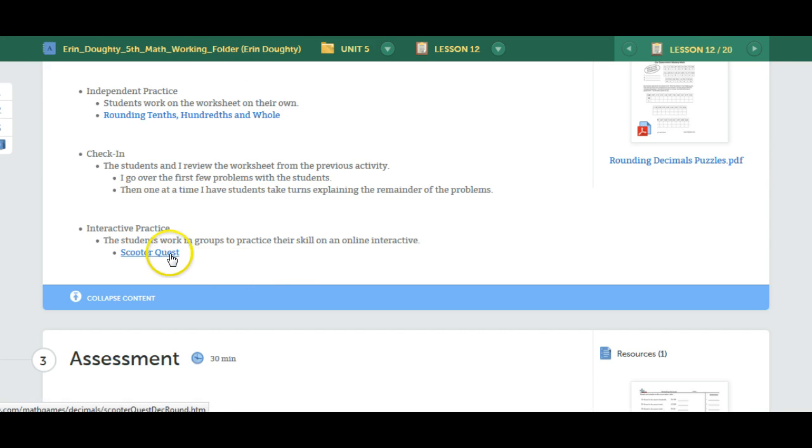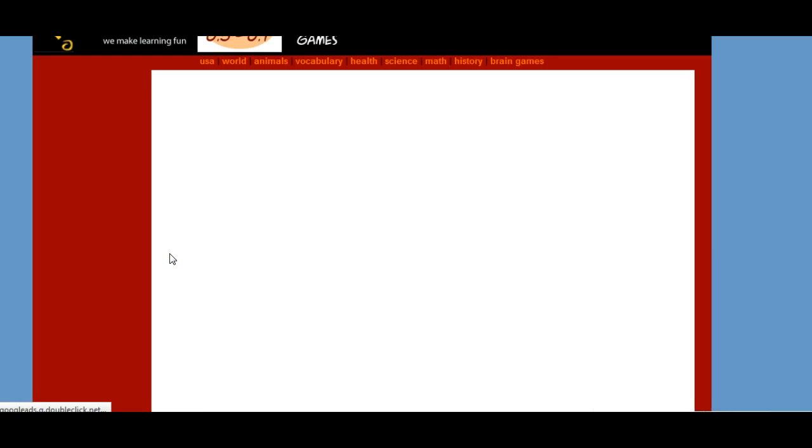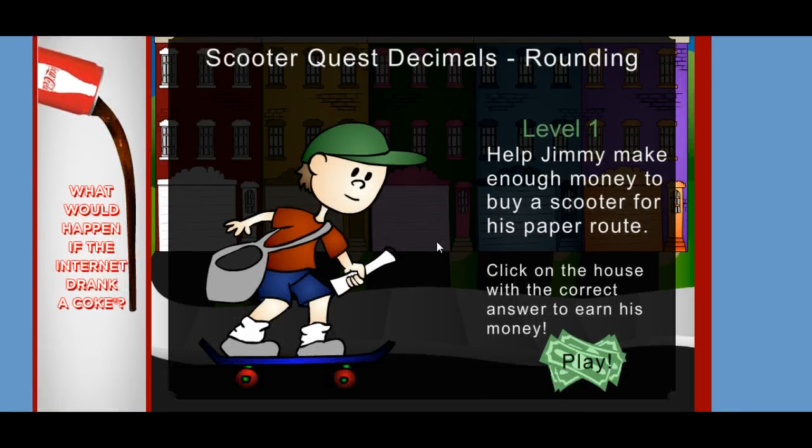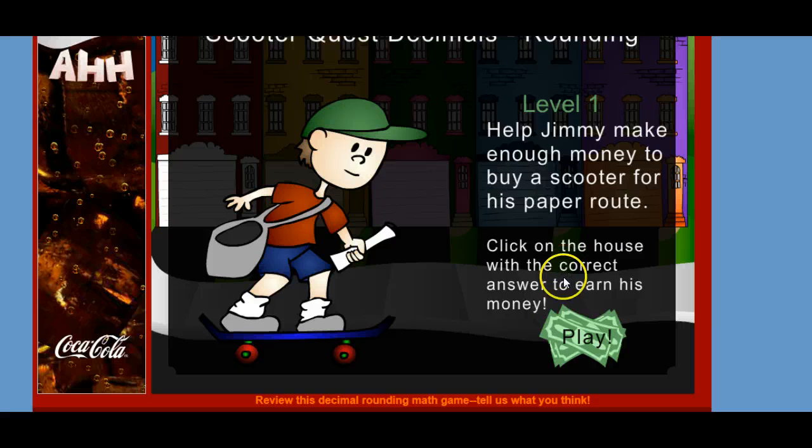Their interactive for the week is called Scooter Quest, and you have to help Jimmy make enough money to buy a scooter for his paper route.